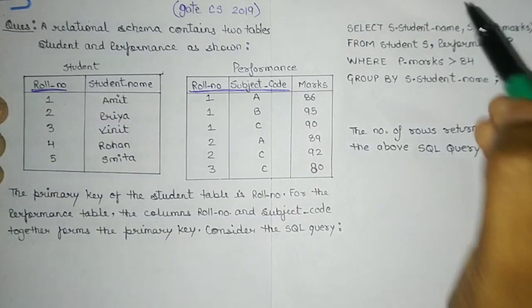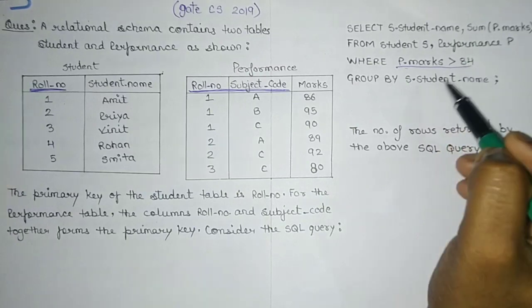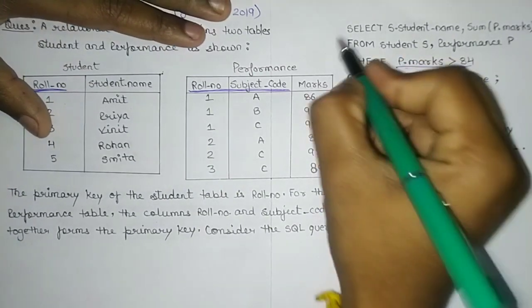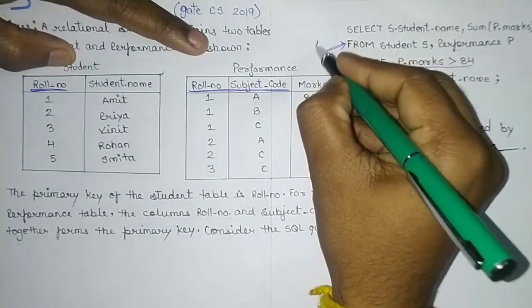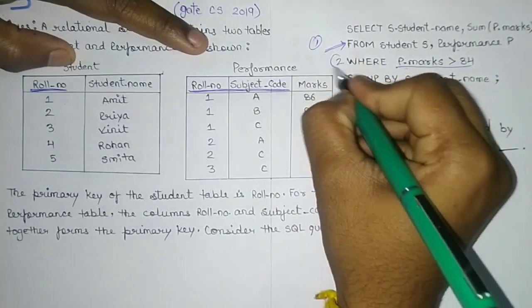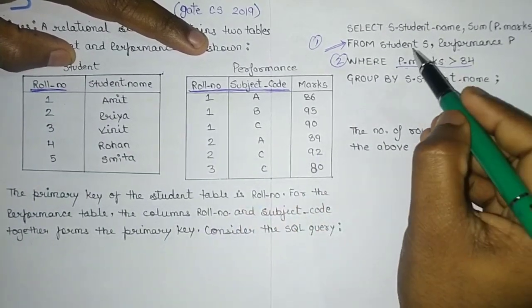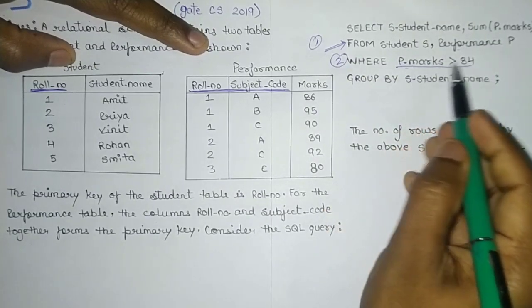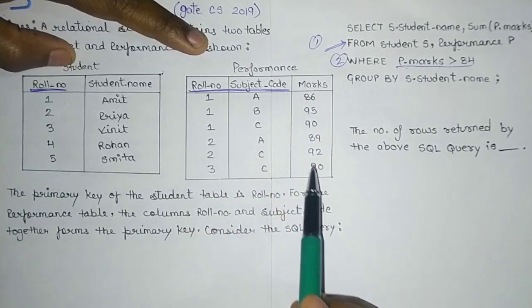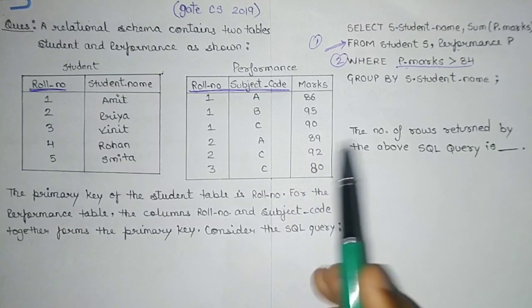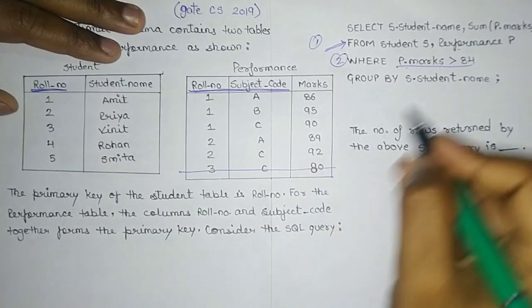The comma in the FROM clause indicates a Cartesian product. The condition given is that P marks must be greater than 84. Starting from the FROM clause, we extract information from student and performance. We include only records in the cross product where P marks is greater than 84. In the performance table, only one record fails this condition — the record with marks 80. So that record (3C80) will not be included in the result.